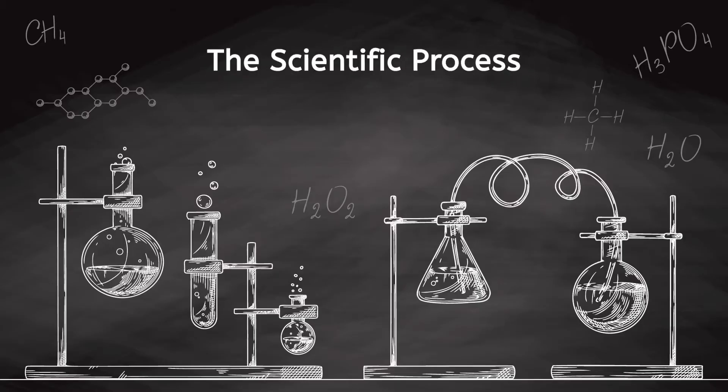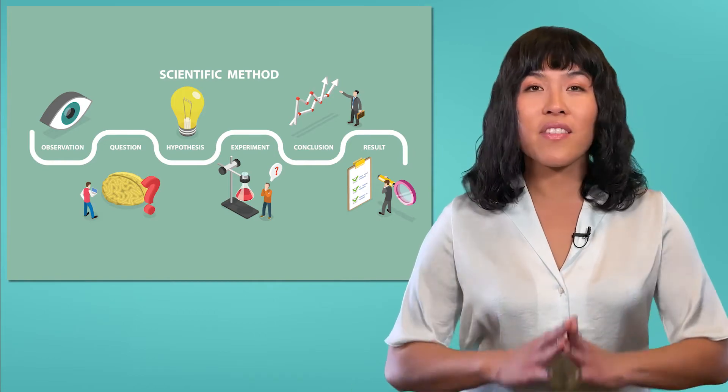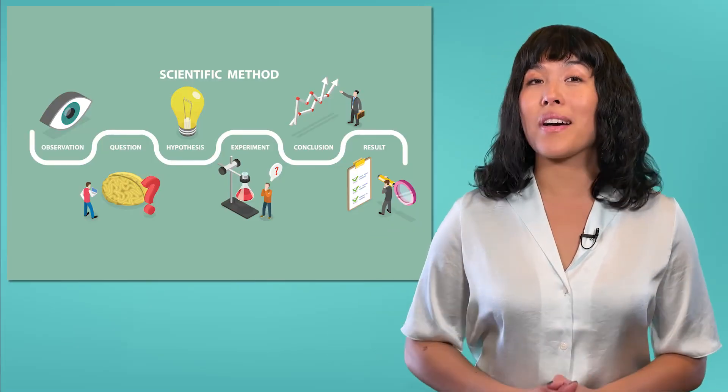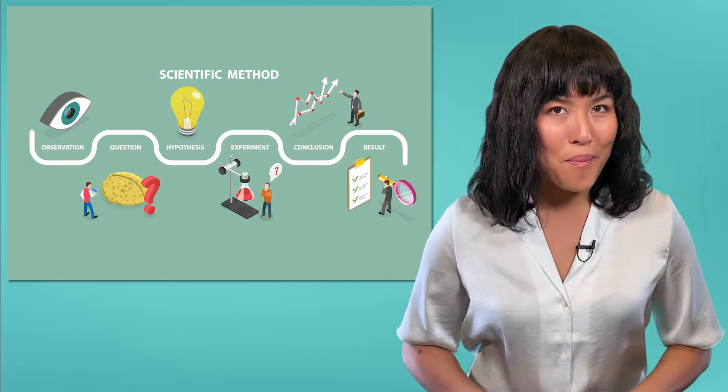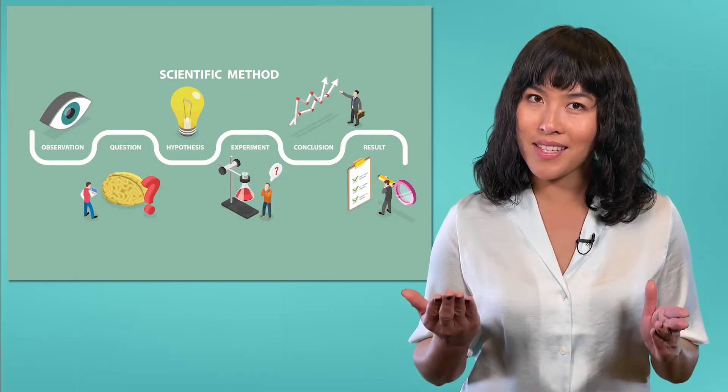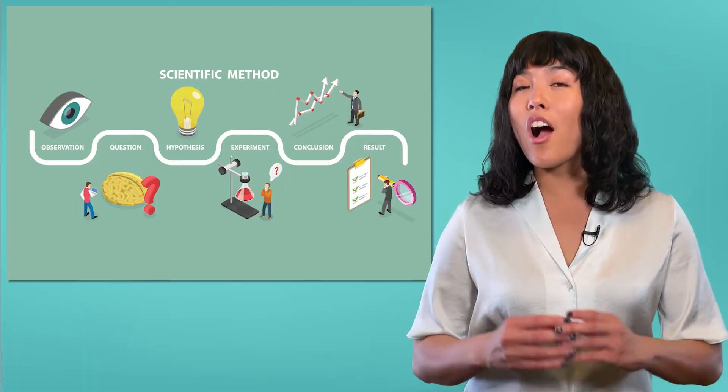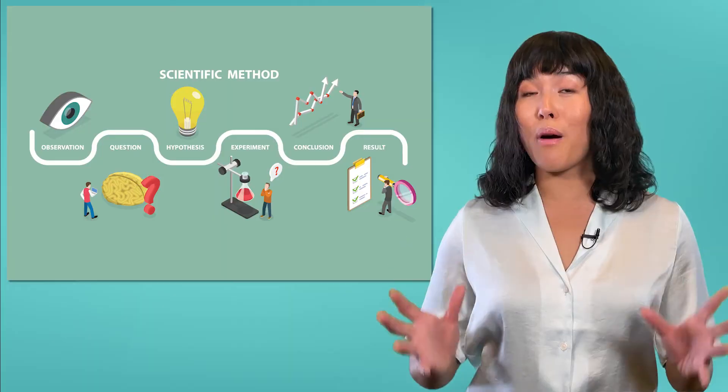But how do scientists actually gather this information and test new ideas? They rely on the scientific process. By now, somewhere in your studies, I am sure you have heard the term the scientific method. This is the process used by scientists to test ideas, acquire knowledge, and investigate phenomena. Traditionally, it includes a list of steps including developing a hypothesis, testing a hypothesis, making observations, and gathering data. This is all still very much a part of the scientific method.